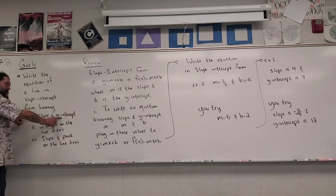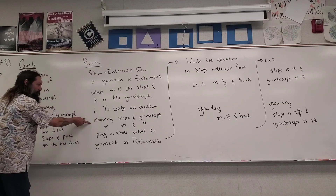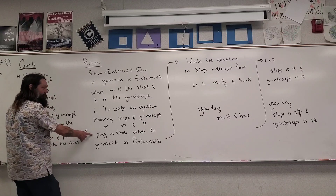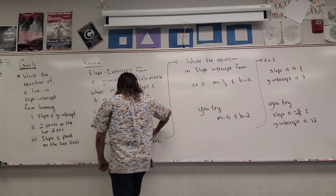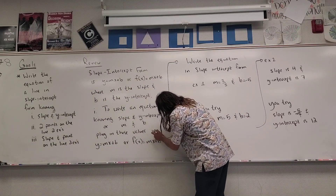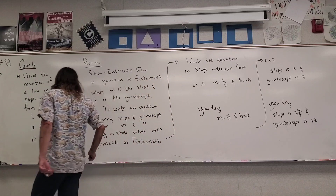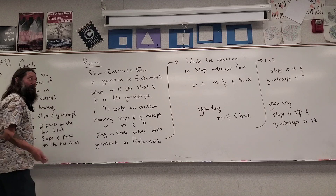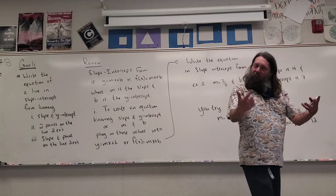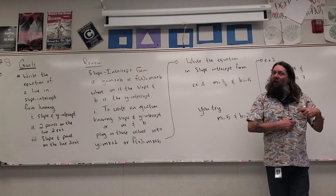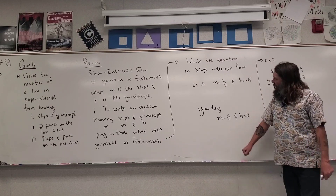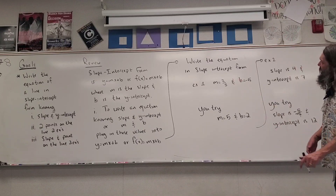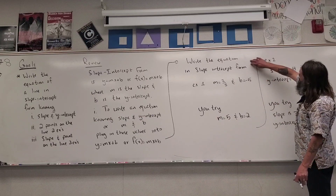To write the equation knowing the slope and the y-intercept — knowing m and b — you simply plug those values into y = mx + b or f(x) = mx + b. I'll do one example, then you hit pause and try one on your own, then I'll do another one. If you don't get it right, hopefully you can figure out where your mistake was.